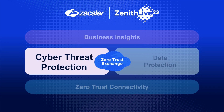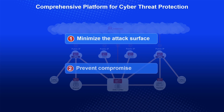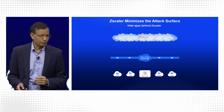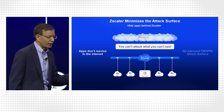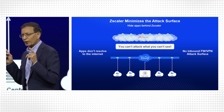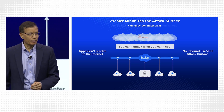Cyber threat protection covers three major areas: minimizing your attack surface, preventing compromise, and eliminating lateral movement. If you think in these three terms, your cyber posture gets better — rather than asking do I have an IPS, do I have a NAC. With our ZPA technology, we minimize your attack surface not by selling you a DDoS technology, WAF, one more firewall, or one more IPS, but simply by hiding your application behind Zscaler so they can't be discovered from the internet and can't be attacked.